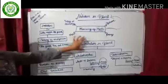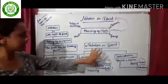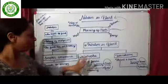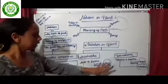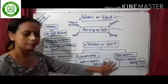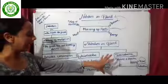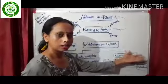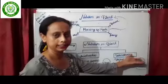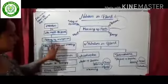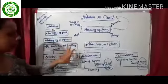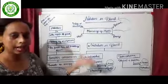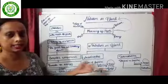So nutrition in plants is divided into two parts: autotrophic and heterotrophic. Autotrophic means self-dependency and heterotrophic means dependency on another. This division is most important and I will discuss it in other classes. Thank you so much.